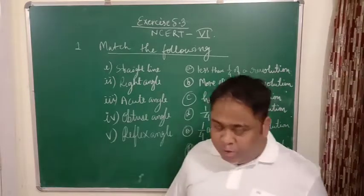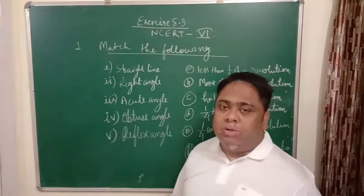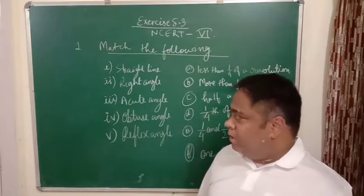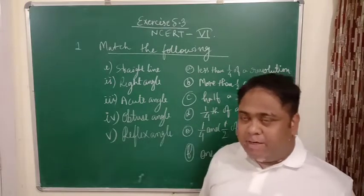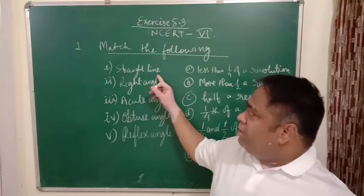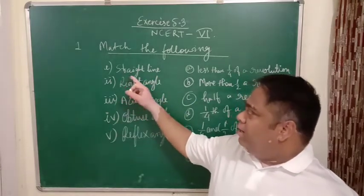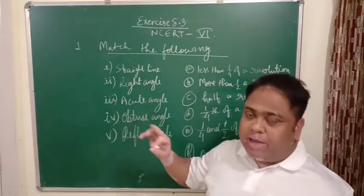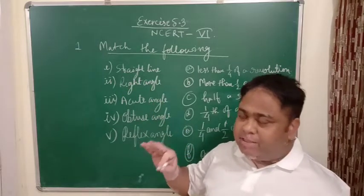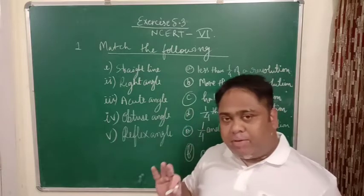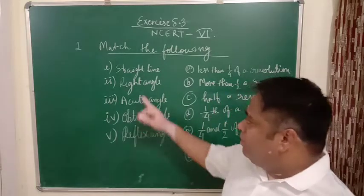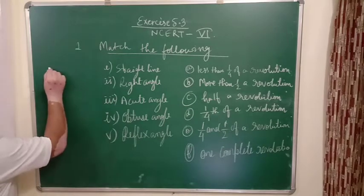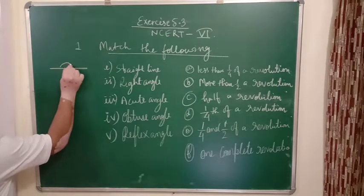Now before we do this, for the students who are not able to understand at first, this primary discussion will help them. Straight line is the angle which is formed at any point in a straight line, so angle formed at any point in a straight line is 180 degrees. It is called as straight line. Right angle means straight line will be like this and it will always be 180 degrees, right angle will be 90 degrees.